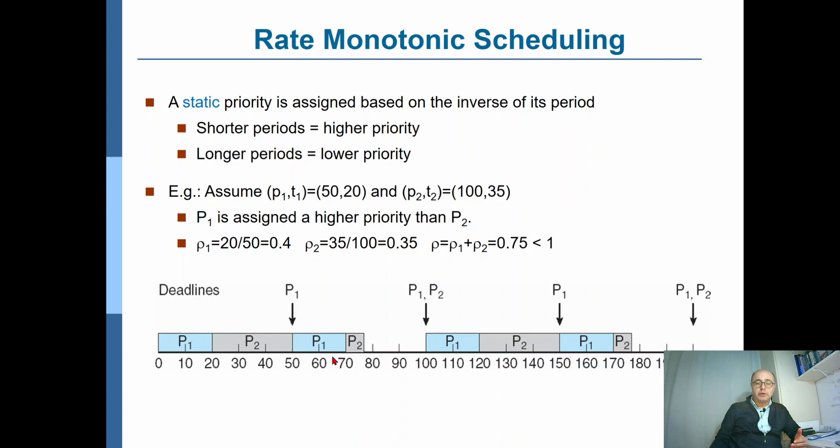And the second occurrence of P1 from the second period goes into the CPU for 20 time units. And when it is done, the previous execution of P2, that's remaining five time units, can now execute. This way, both P1 and P2 will meet their respective deadlines both at 100.